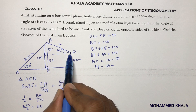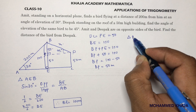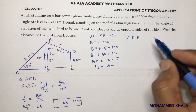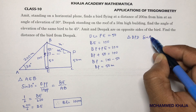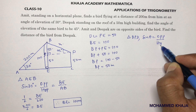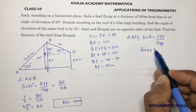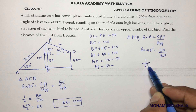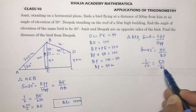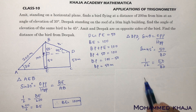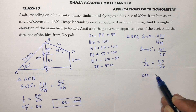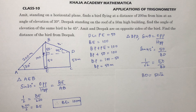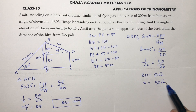Now in triangle BPD, we need the value of X which is BD. Sin theta equals opposite over hypotenuse, so sin 45 equals BP over BD, which gives us 1 over root 2 equals 50 over BD. Therefore BD equals 50 root 2 meters. So the distance between the bird and Deepak is 50 root 2 meters.